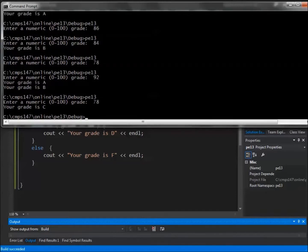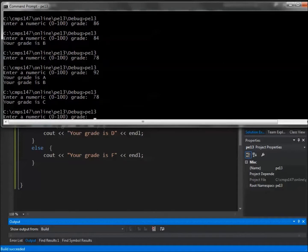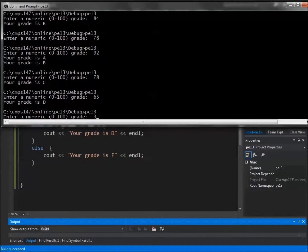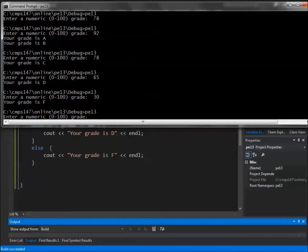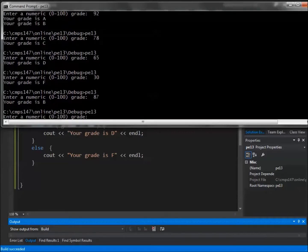So if we run a 78, we get a C. If we get a 65, we've got a D. If we've got a 30, we've got an F. If we've got an 87, we've got a B. And if we get a 93, we get an A.